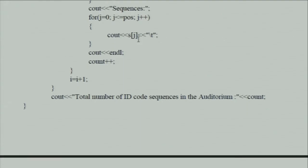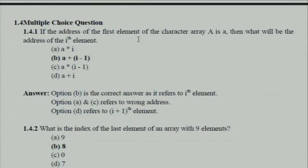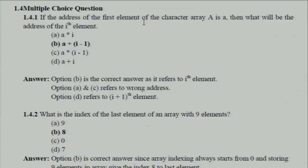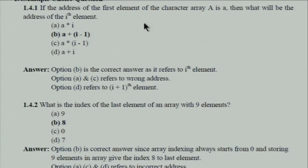One teammate, Mr. Sandeep, will discuss the MCQs. Two questions were selected out of 14. The first question is about representing the address of the ith element of an array — the options are *(a+i), a+i-1, *(a+i-1), and a+i. The correct answer is a+i since the addition of the ith value gives the perfect address location. The second question: what is the index of the last element of an array with nine elements? Since arrays start from index 0, the answer is 8.